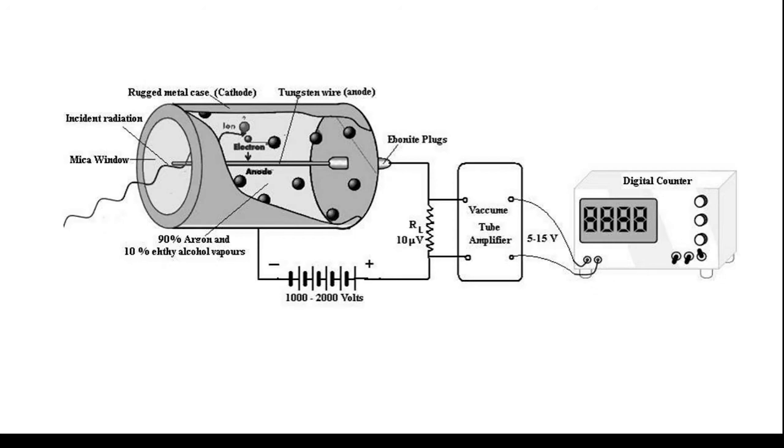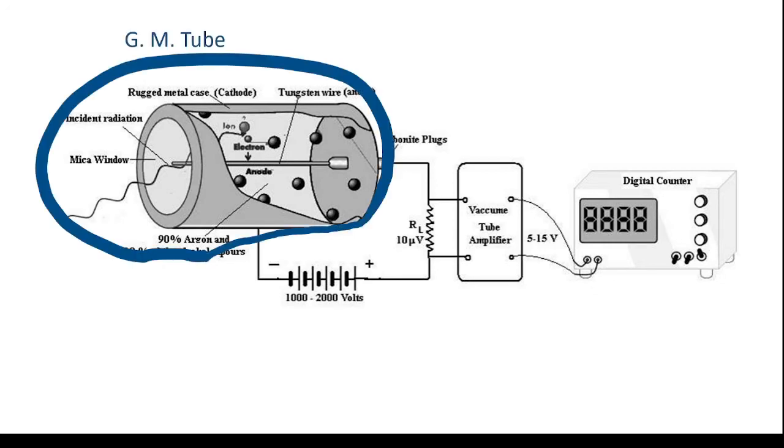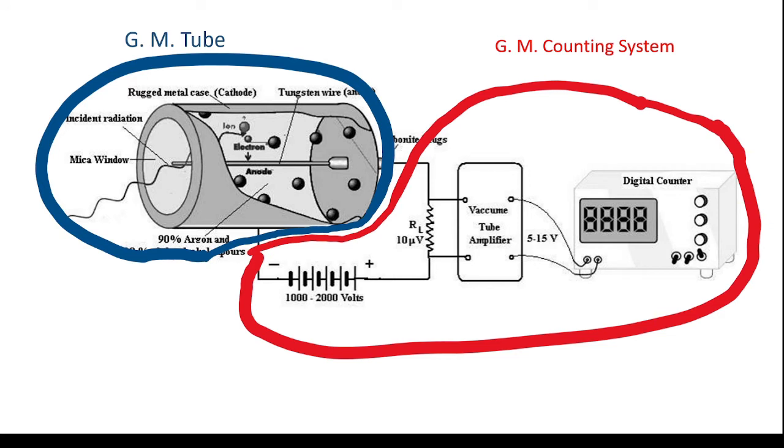Just to refresh your memory about the GM counter. This is the schematic representation of the GM counter. The highlighted part is basically called as the GM tube and the remaining part highlighted in red is called as GM counting system.